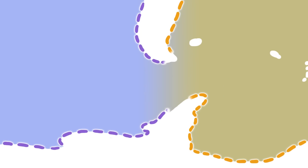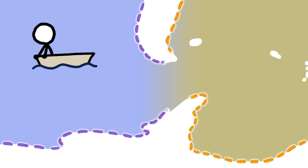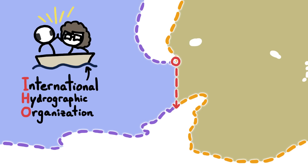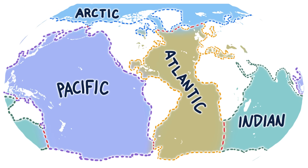To deal with parts that aren't outlined by land, we — specifically map makers and government organizations who like things cut and dried — took the sticky-outiest bits of land and extended lines straight out from them. Boom. Problem solved. We now have clearly defined oceans.